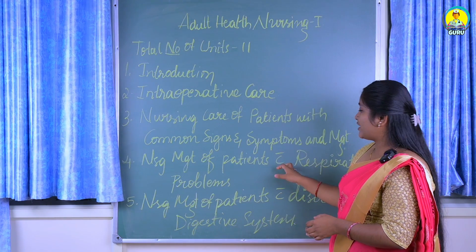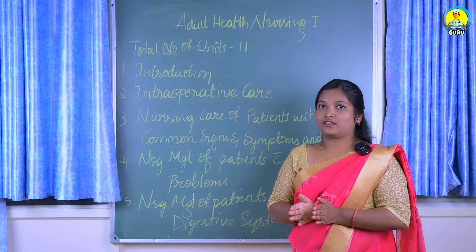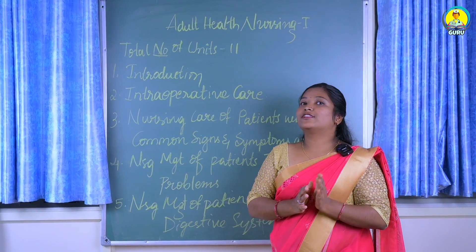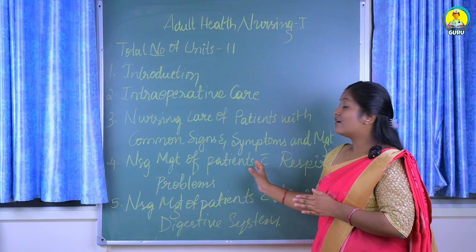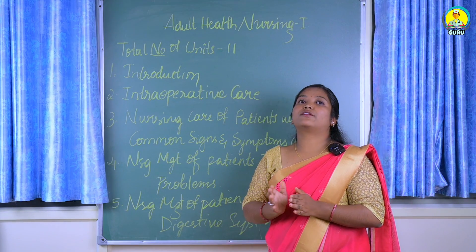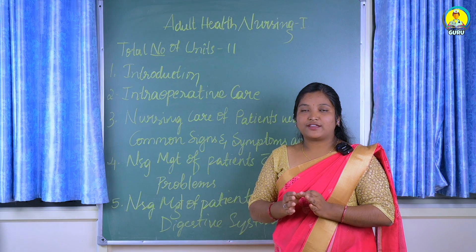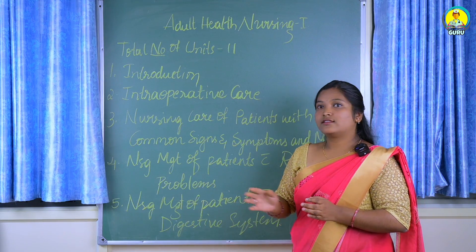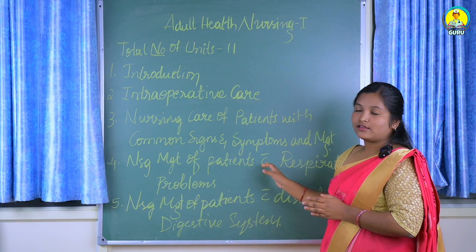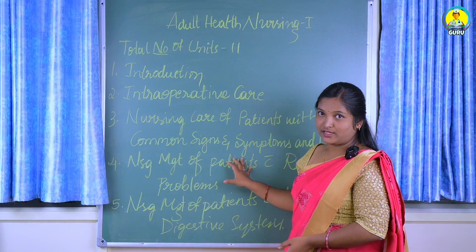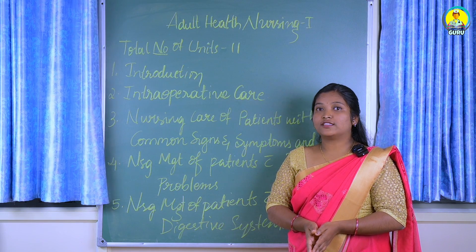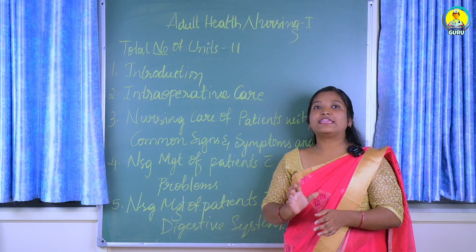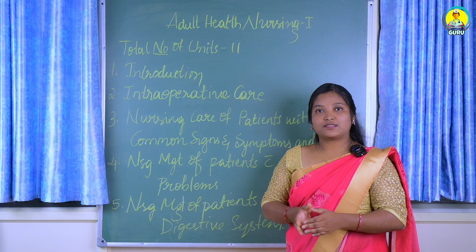The next unit is nursing management of patients with respiratory problems. This is also one of the important units. If you studied anatomy and physiology regarding the respiratory system, you can study this unit very nicely. Here we deal with respiratory disorders such as asthma, emphysema, and COPD, and we learn about their nursing management. Important questions from this unit include nursing interventions for management of COPD, pneumonia, and acute respiratory distress syndrome.